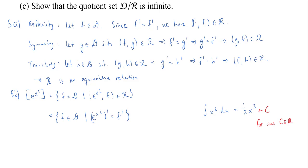So what are all the functions that end up having the same derivative as e to the x squared? It's simply all functions of the form e to the x squared plus a constant. This equals all things of the form e^(x²) + c where c is a real number. That is the equivalence class of e to the x squared.